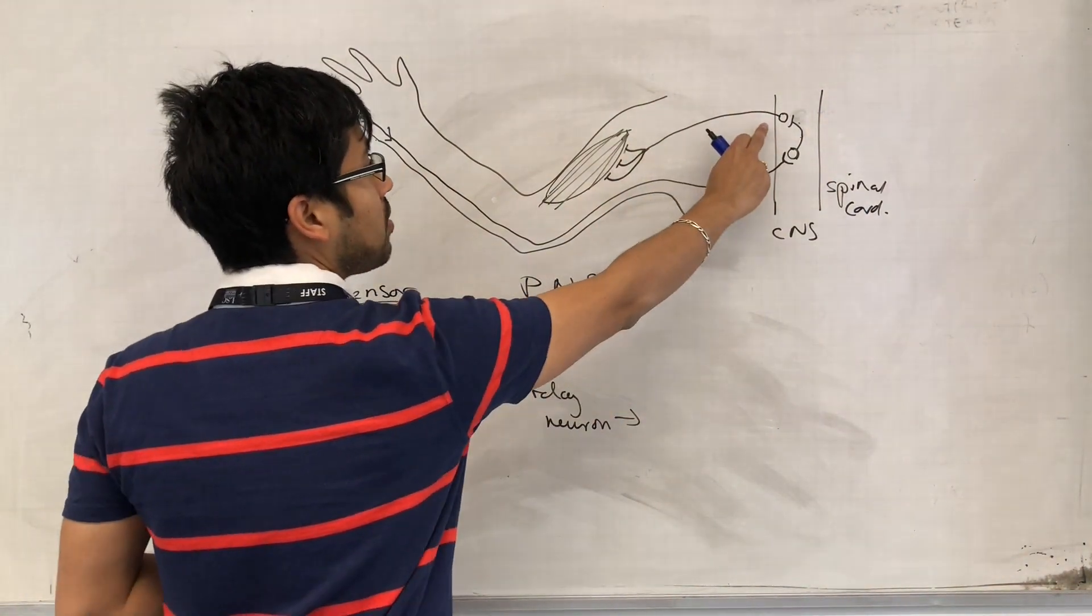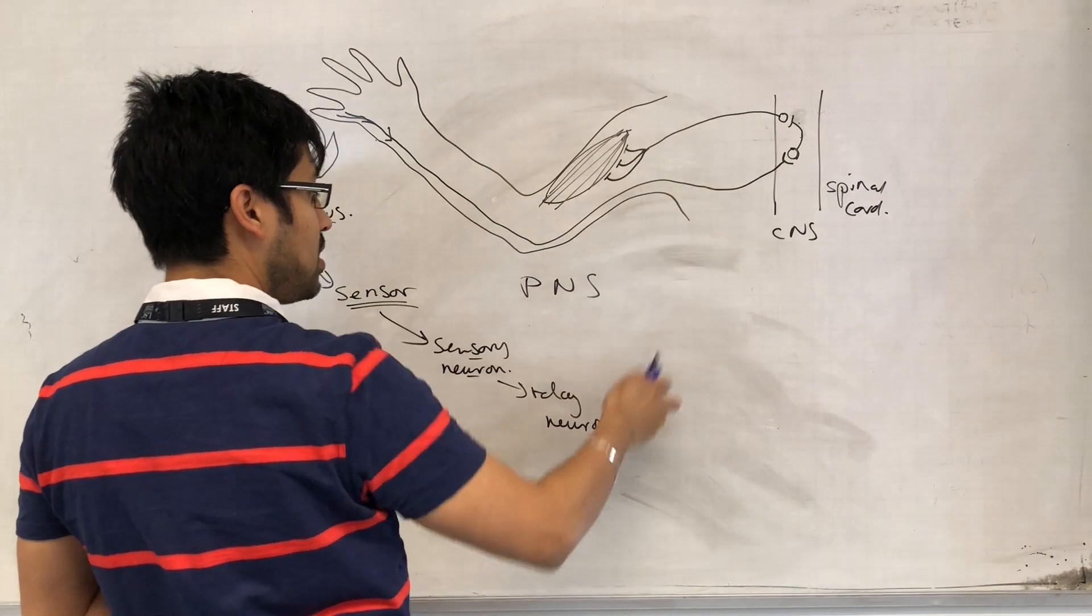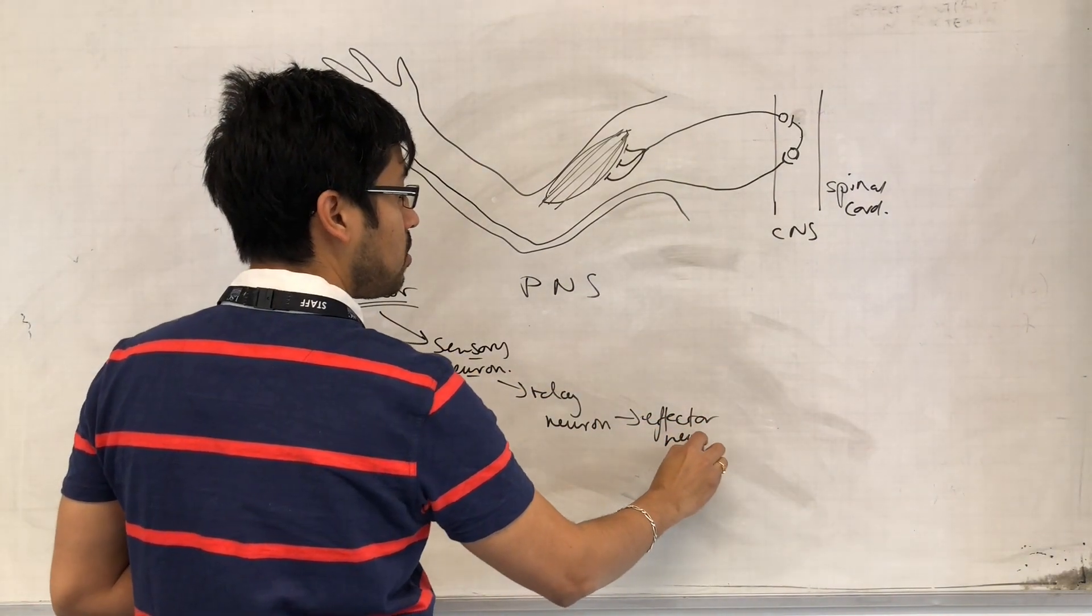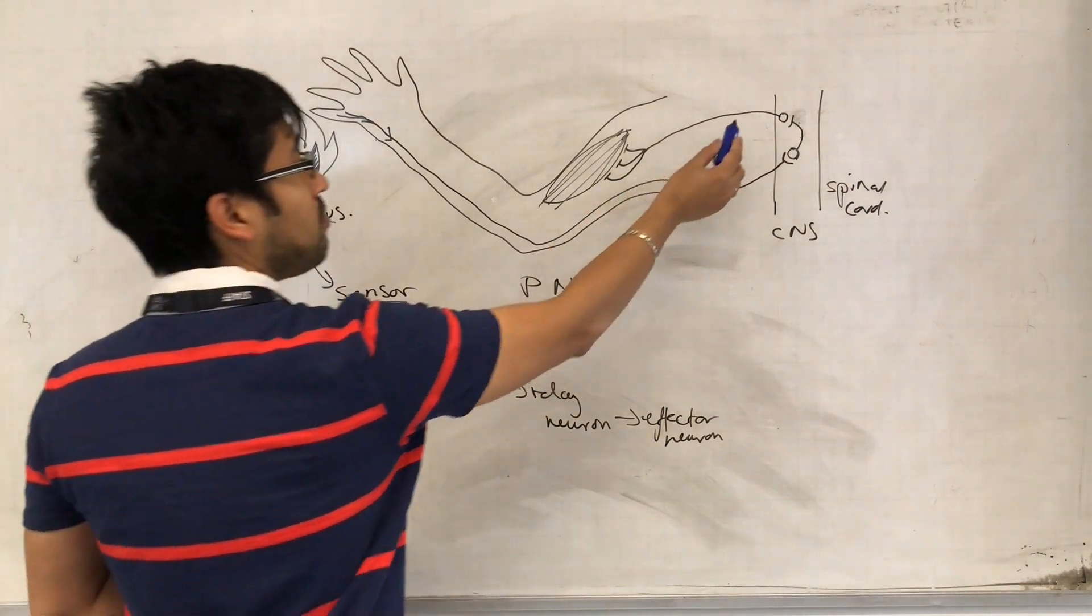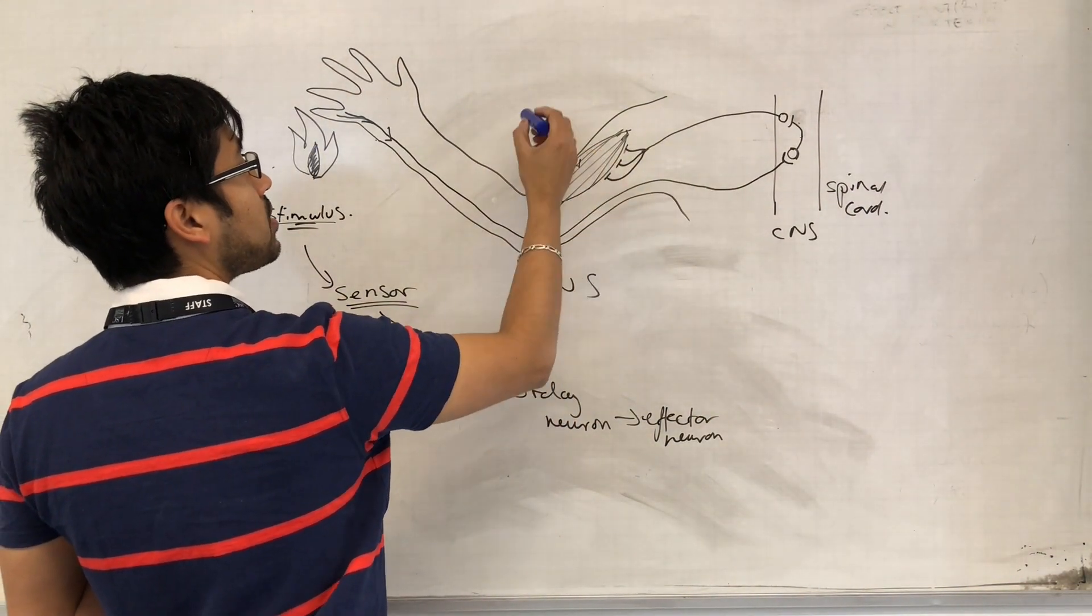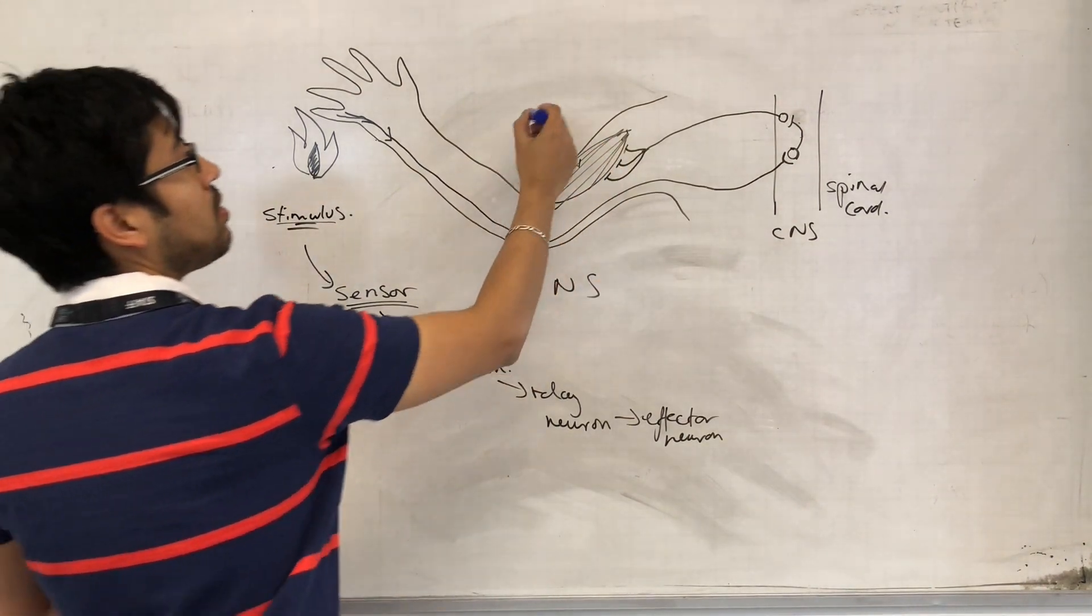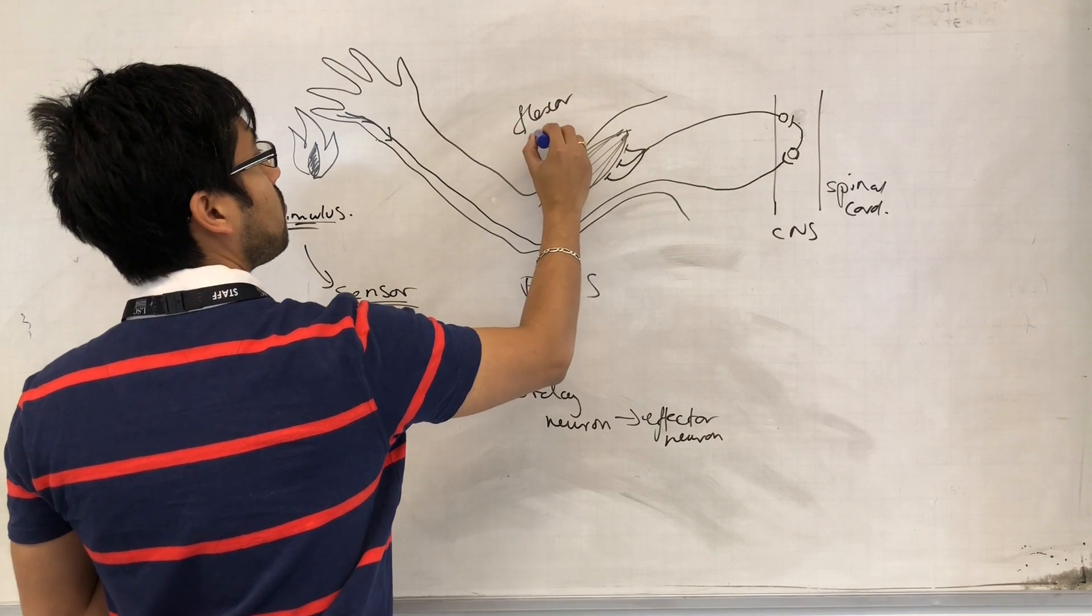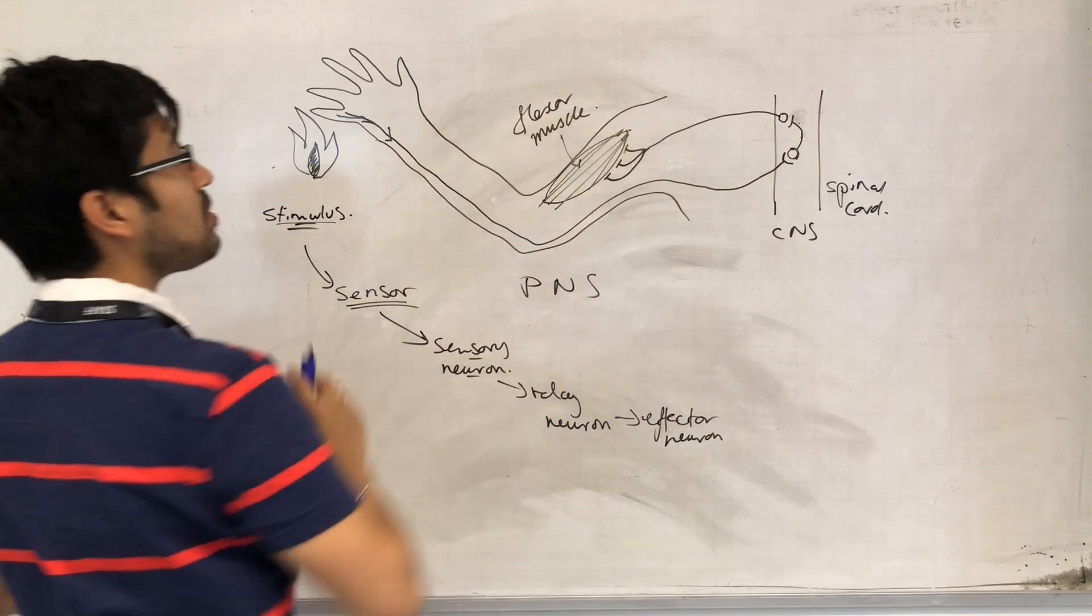So the relay neuron then results in impulses being generated in the effector neuron. And the effector neuron, in this case, it stimulates the contraction of a flexor muscle.